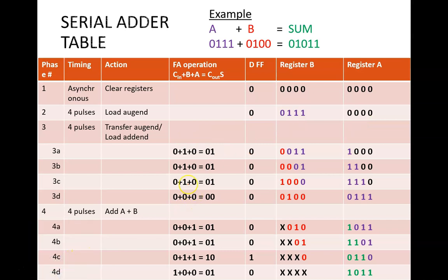The same thing happens during the next clock cycle. This zero comes from the D flip-flop. This one comes from the rightmost bit in B. This zero comes from the rightmost bit in A.